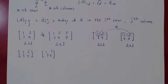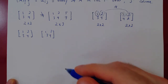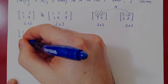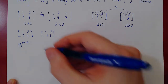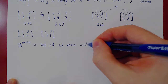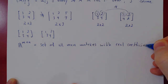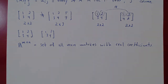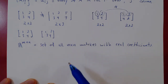Matrices are equal if they have the same size and the same corresponding entries. We write ℝ^(m×n) to denote the set of all m by n matrices with real coefficients. As we will see later, it is possible to have other coefficients, but for now we only consider real numbers.